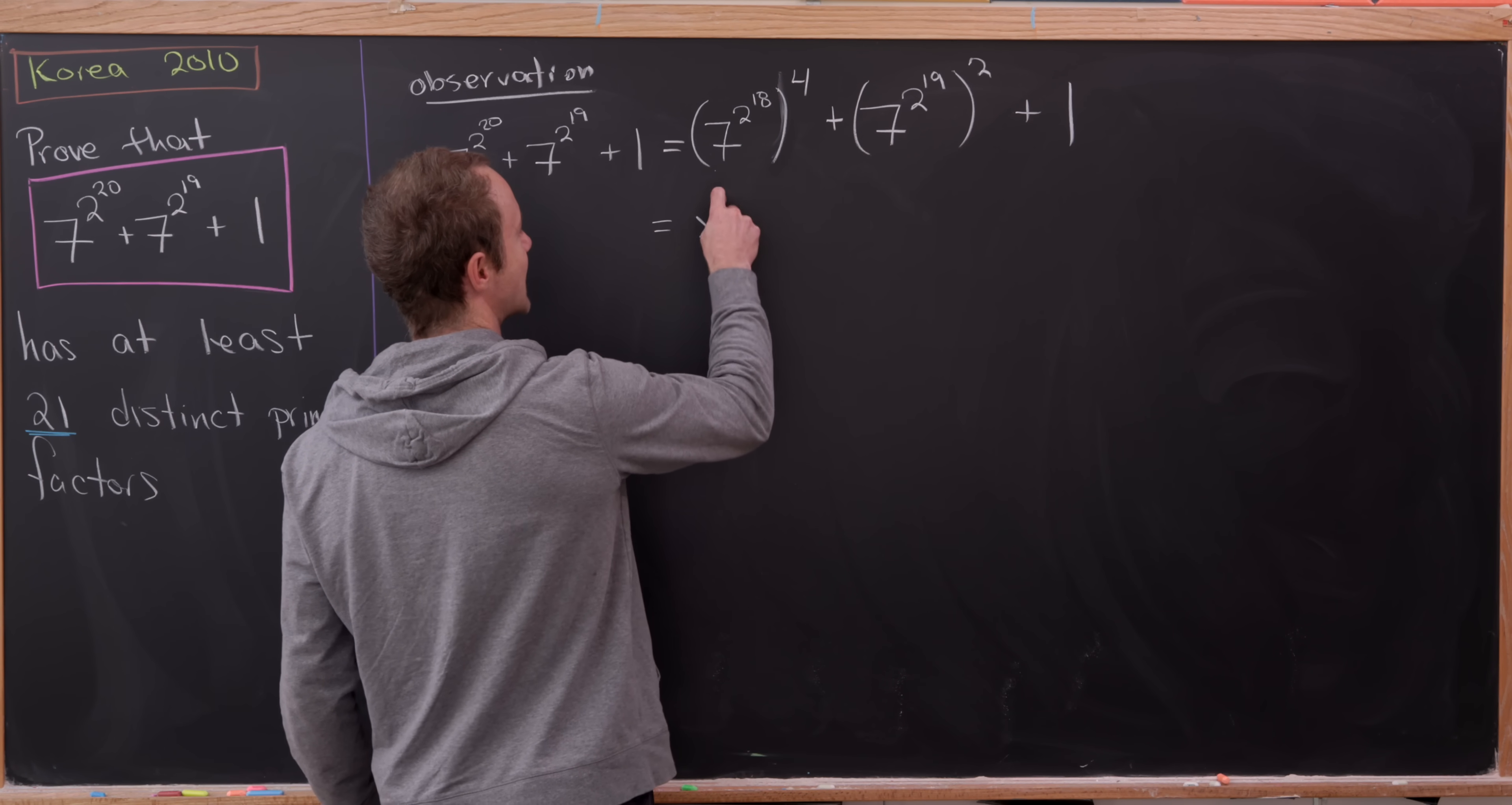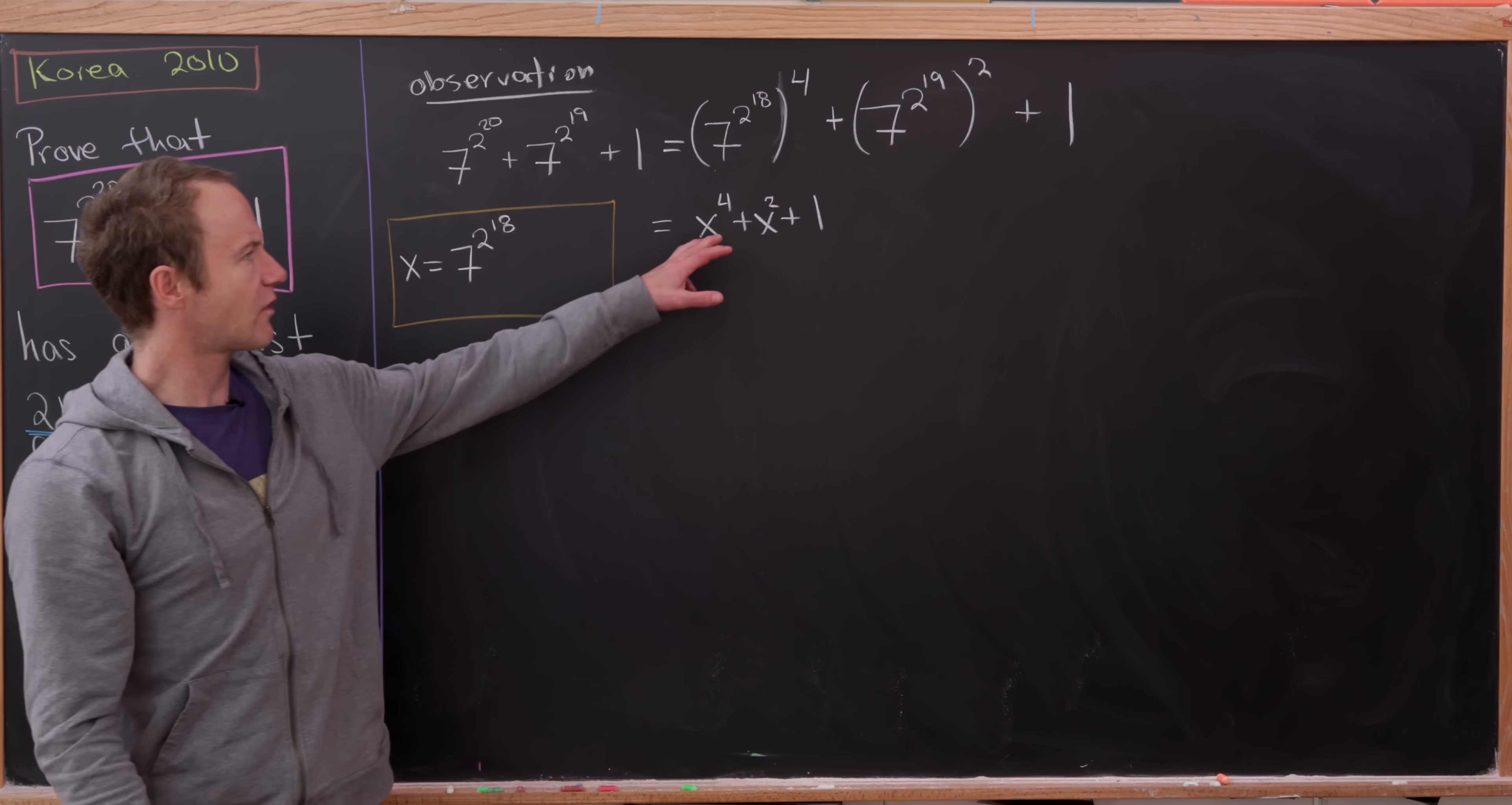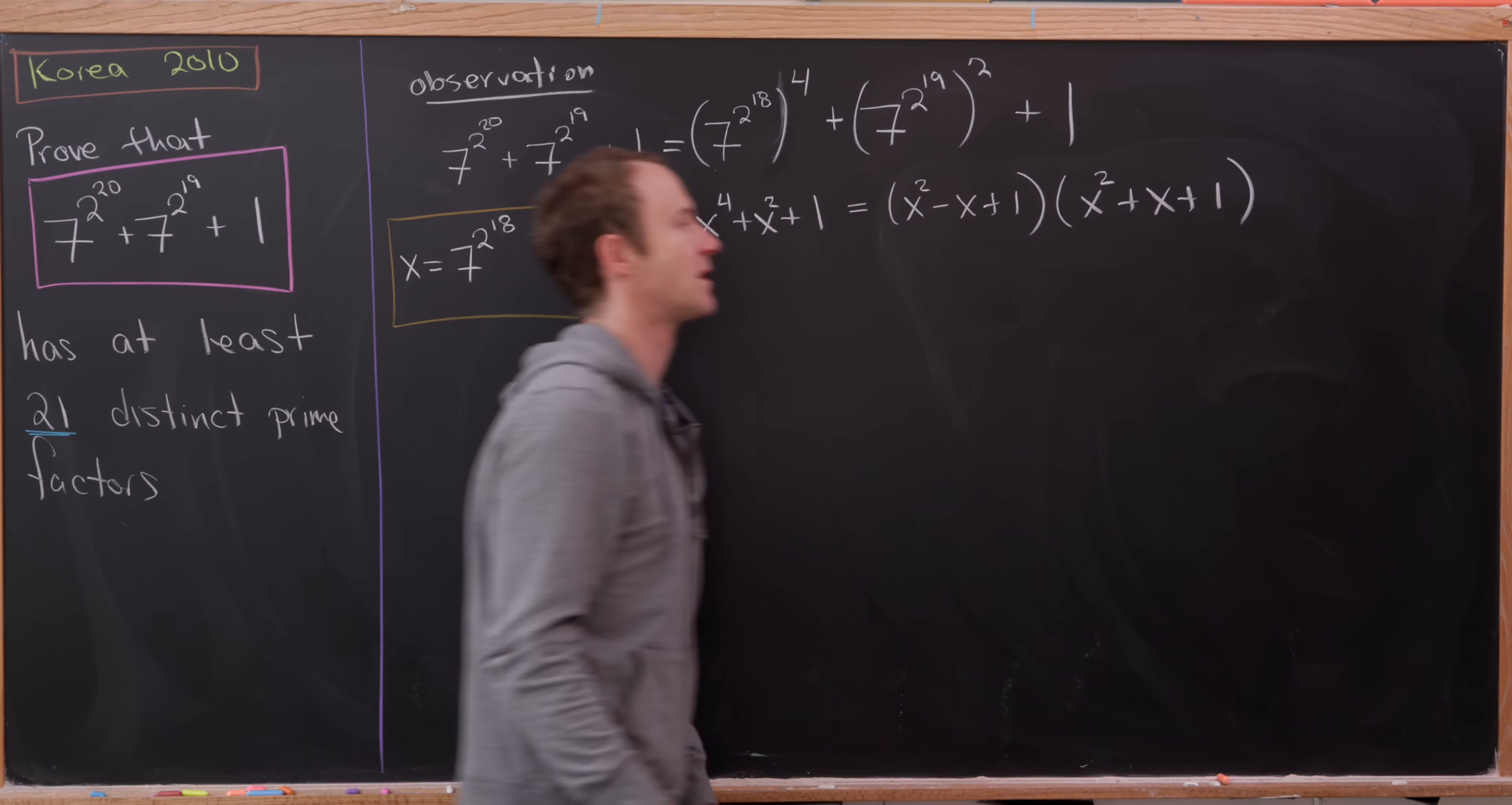So in other words it's of the form x to the 4th plus x squared plus 1, where of course we're taking x to be something. In this case, x is going to be equal to 7 to the 2 to the 18. But now looking at it like this we can actually factor this. And this is a fairly standard quartic polynomial factorization so it's one to keep in mind if you ever see this sort of polynomial. And in fact this factors as x squared minus x plus 1 times x squared plus x plus 1.